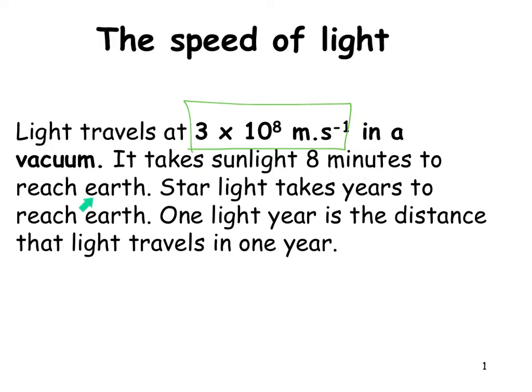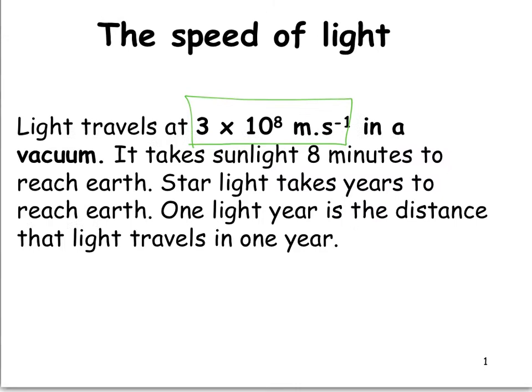It takes sunlight about 8 minutes to reach the Earth because of the distance. Starlight can take years to reach the Earth. There is something called a light year, and that is the distance that light travels in one year.